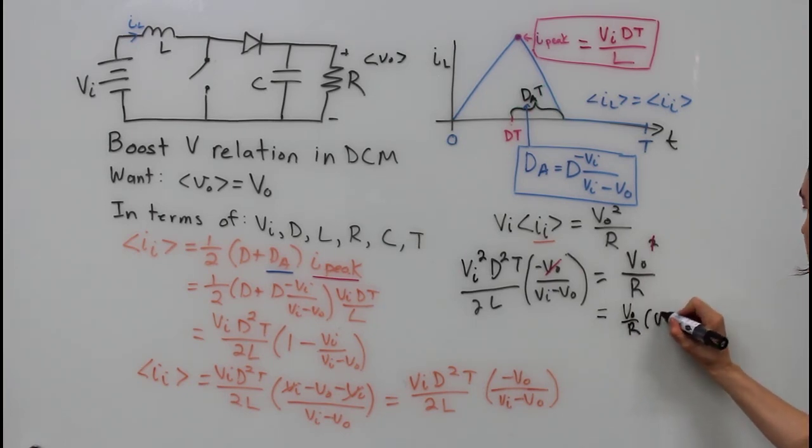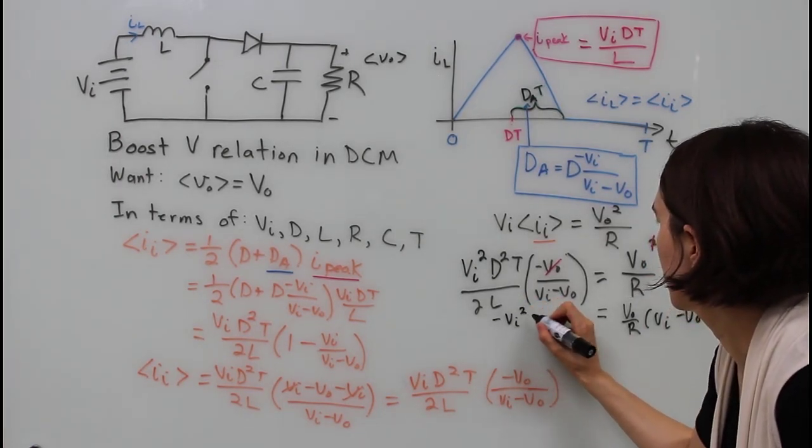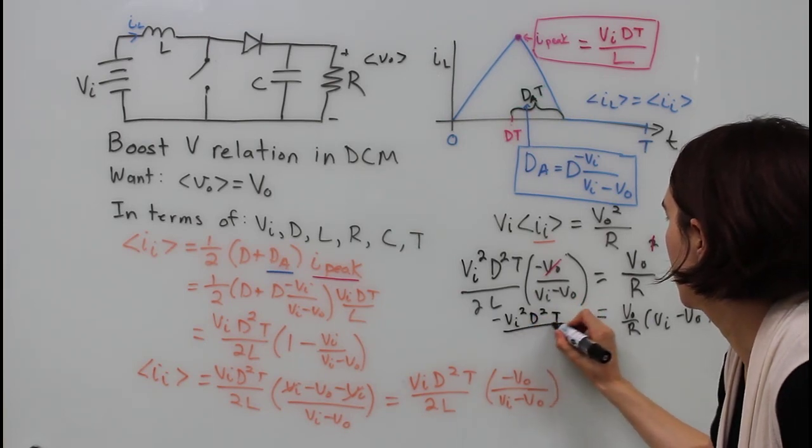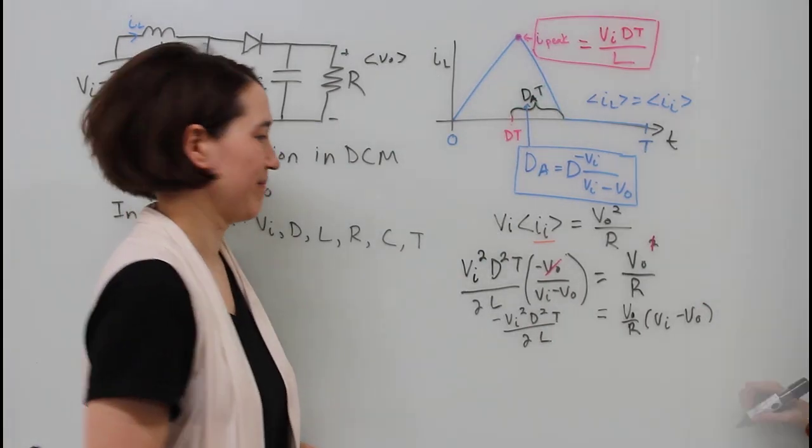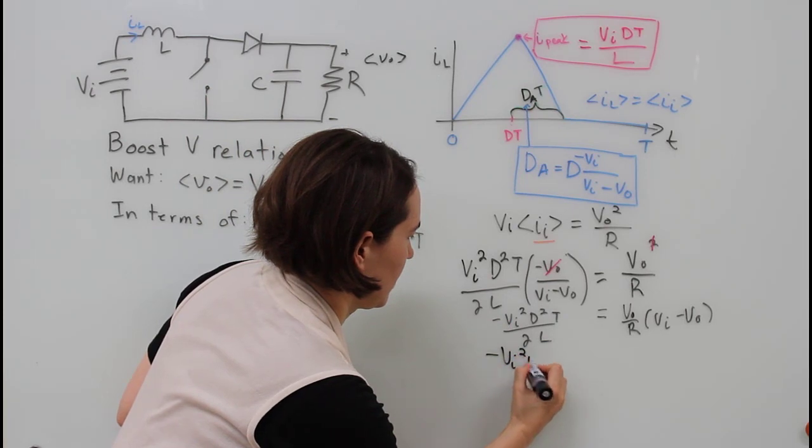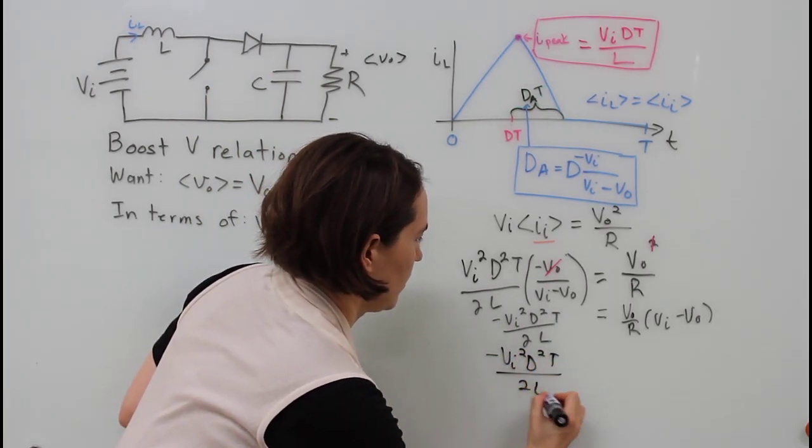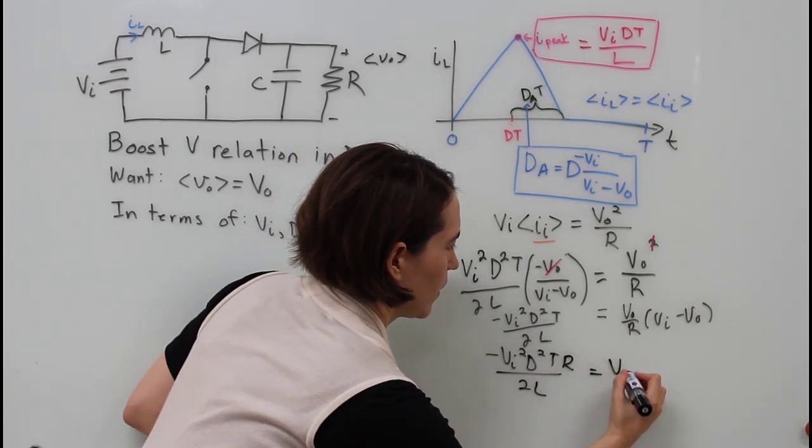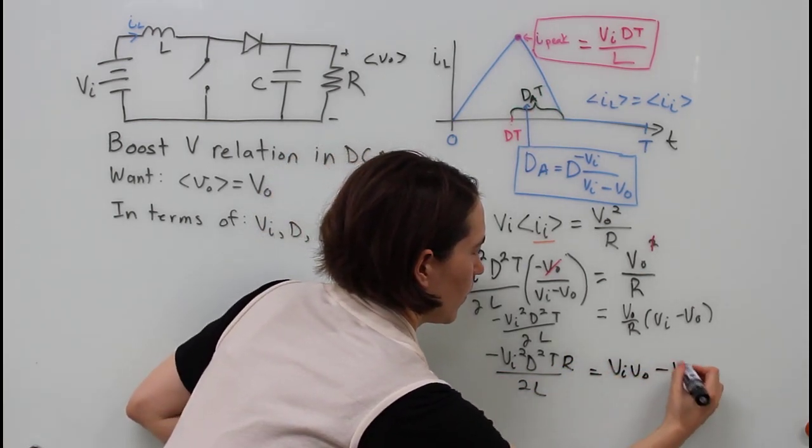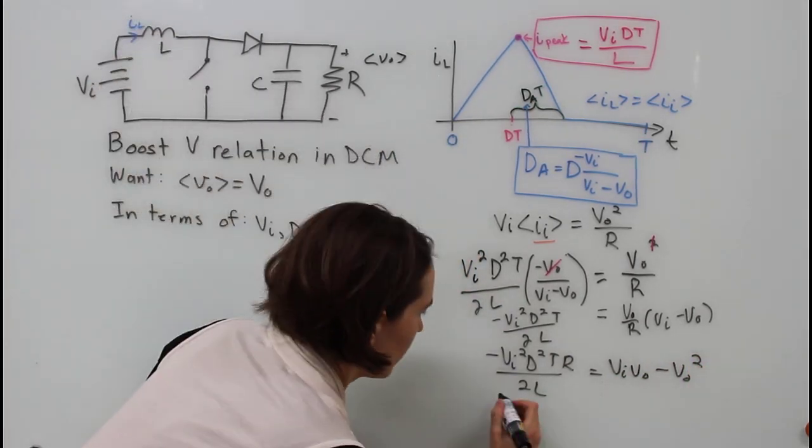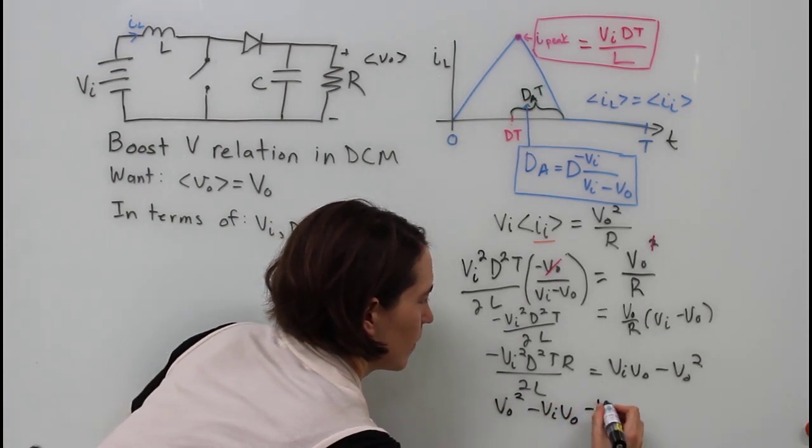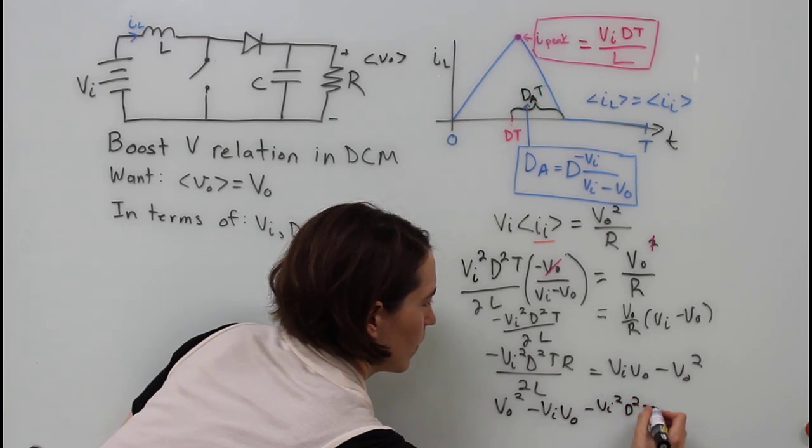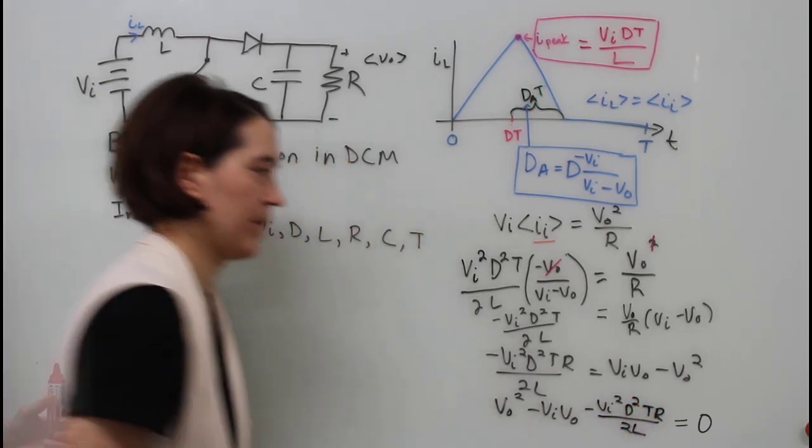We can move the denominator, the V in minus V out, over from left to the right. Move the negative to the front of the coefficient term on the left side. Then we're going to move the R term from the right to the left side, and distribute the V out over the two terms. Now let's move everything from the right side to the left side of the equation and write everything out. And this is all equal to zero.